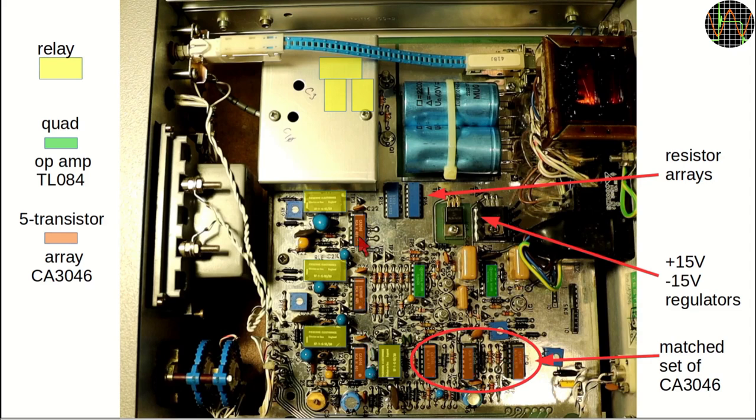Going even further, for this unit, Racal engineers measured the arrays to select 3 matching ones. Sadly, the manual does not say what criteria they were looking for. They have marked them with colored dots. One would need to replace them as a set to keep the performance in spec.